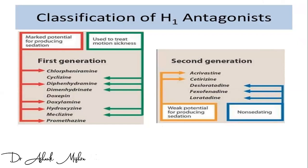Antihistamines can be classified as H1 antagonists or H2 antagonists. For H1 antagonists, there are two generations: generation 1 and generation 2. Generation 1 has a marked potential for producing sedation and can also be called sedative antihistamines. They are also used to treat motion sickness.